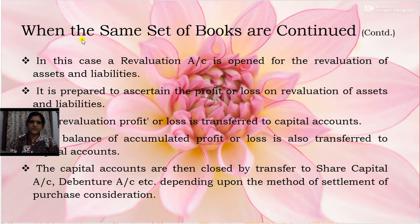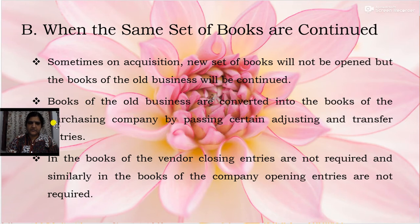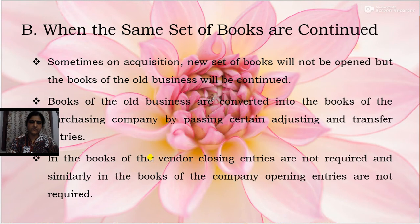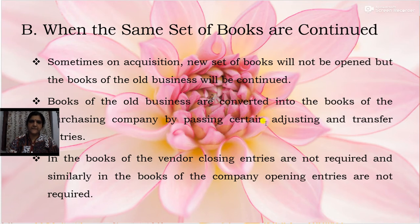To summarize the key points when the company decides to continue with the same set of books: the books of the old business are converted into the books of the purchasing company by passing certain adjusting and transfer entries. The vendor company need not pass closing entries and the purchasing company need not pass opening entries. When a new set of books is opened, two entries were required — the first for taking over assets and liabilities, and the second for payment of purchase consideration.